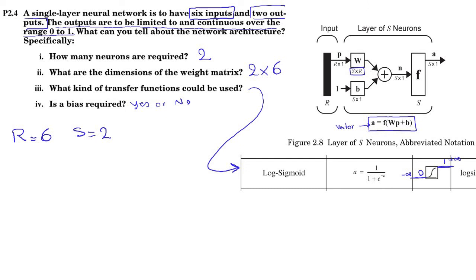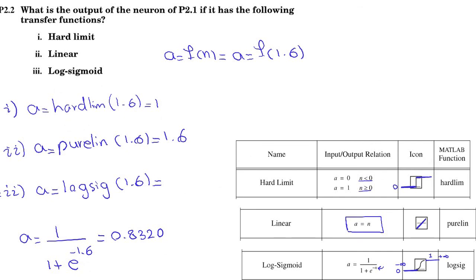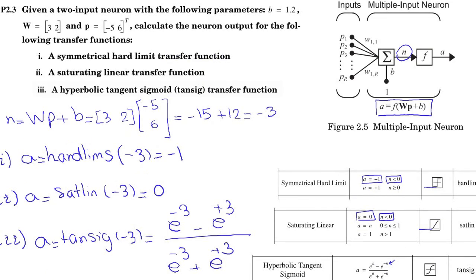And, as a summary, we saw, for the first problem, just structure of a neuron. On the second problem, we found how we can calculate output of different transfer functions. And, for the third problem, we saw multiple input and single output neuron.